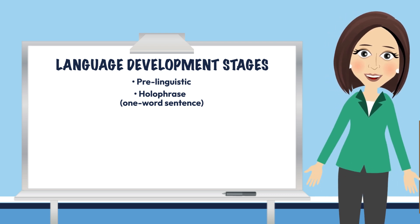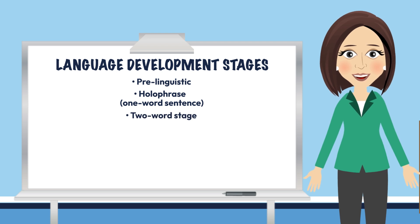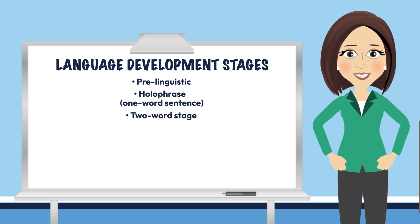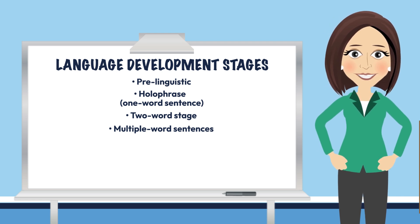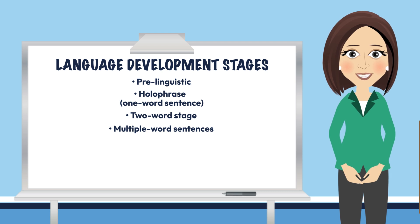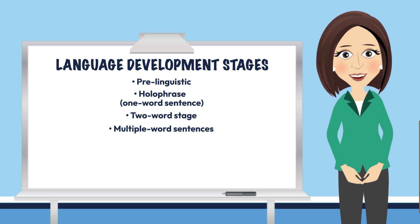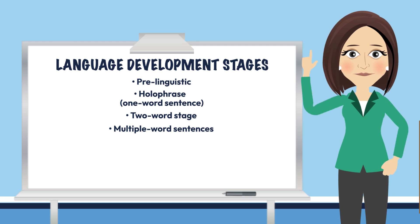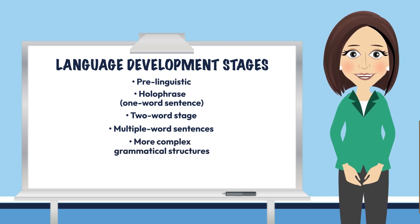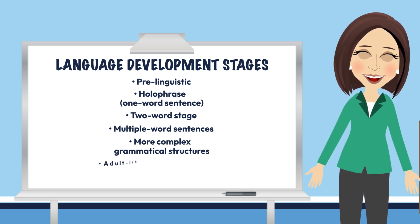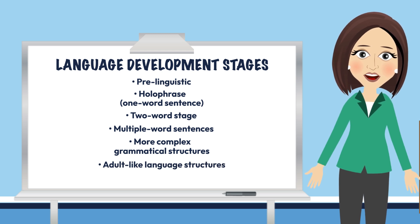Around a year and a half old, children begin to combine a couple of words together as they enter the two-word stage. The multiple word stage occurs around age two, as they begin to use words, phrases, and even sentences to convey meaning, even in the absence of correct grammar. The use of more correct grammar in more complex sentences begins around age three and continues for two to three years in the more complex grammatical structure stage. Finally, at around age five or six, they enter the adult-like language structure stage, where they continuously strengthen their oral language development.